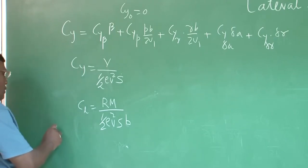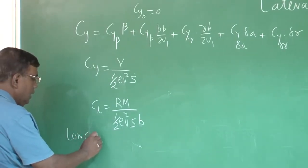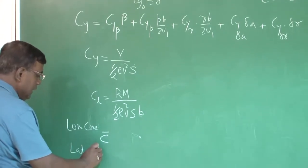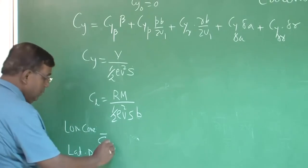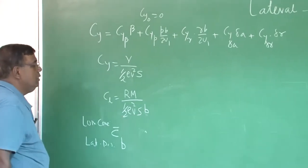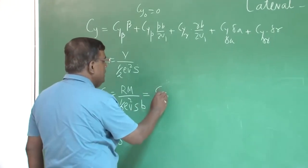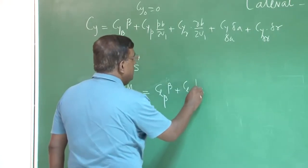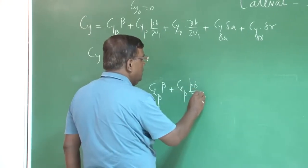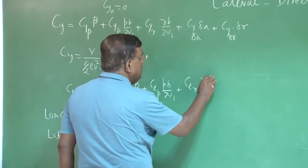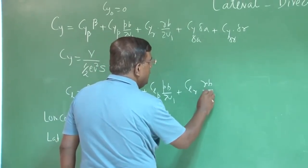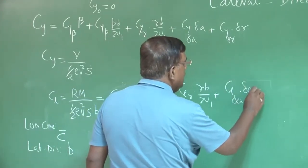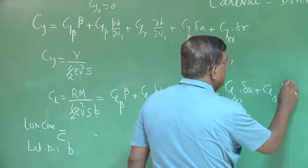Please note that for the longitudinal case, the characteristic length was c-bar, but for the lateral-directional case, the characteristic length will be the span b. So I can write: Cl = Cl_beta times beta plus Cl_p times pb/2u1 plus Cl_r times rb/2u1 plus Cl_delta_a times delta_a plus Cl_delta_r times delta_r.